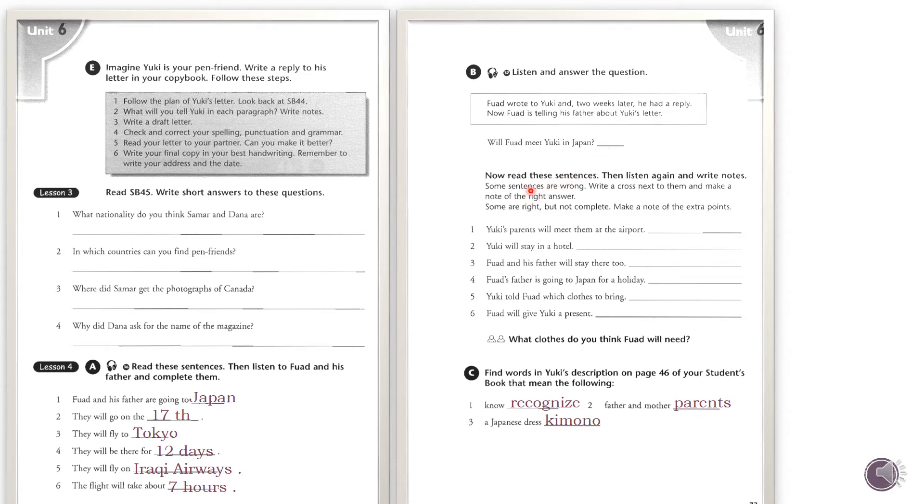Now read. You heard the dialogue between Fouad and his father. Now read these sentences. They'll listen again and write notes. Some sentences are wrong. Write a cross next to them, an X mark beside them if they are wrong, and make a note of the right answer. Some are right but not complete. Make a note of the extra points.